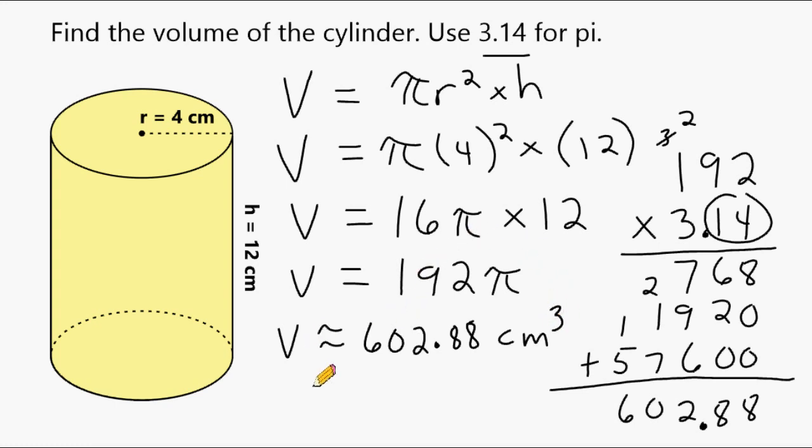Now, the reason I put approximately equal to is because once I substituted 3.14 in for pi, that value is an approximation. And any time you multiply any other number by an approximation, the result is going to be an approximation.